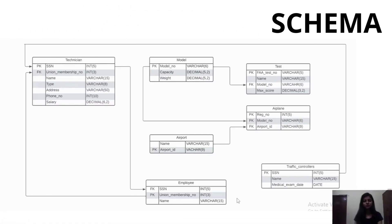In this part of the video we are going to see the schema for the database. A schema is the logical representation of the database. Based on our EER diagram, we have seven tables in this schema. In each table, to represent the primary key we have used 'P key' in front of each primary key, while we have used 'F key' in front of each foreign key. Let's now see all the seven tables.